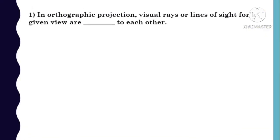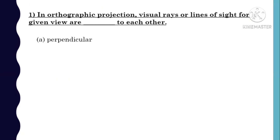First MCQ: In orthographic projection, visual rays or lines of sight for the given view are in which condition to each other? Options are: A) perpendicular, B) oblique, C) normal, D) parallel.